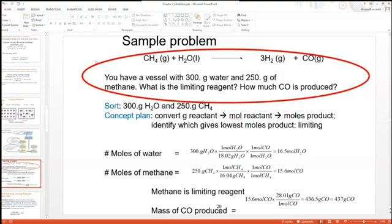Looking at methane to CO, it's a one-to-one ratio. Therefore, the moles of methane is 15.6, which will produce 15.6 moles of CO. For H2O, it's also a one-to-one ratio, meaning we have 16.5 moles of H2O will produce 16.5 moles of CO. So this means that methane is limiting because it produces less CO if left to react fully.